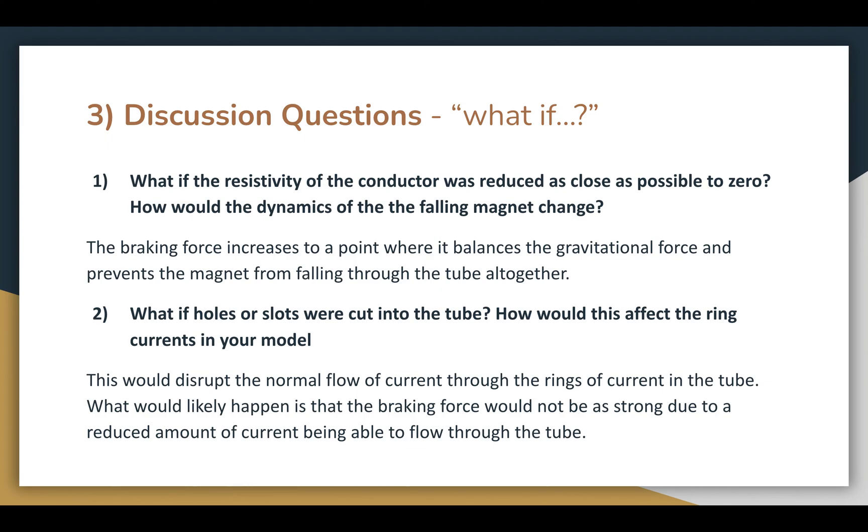And lastly, what would happen if we cut holes in the tube? Well, it's hard to say without actually doing the experiment, but what would likely happen is that this would disrupt the normal flow of current in the tube, thereby reducing the extent to which the aluminum tube is able to apply a breaking force to the falling magnet. This would be due to a reduced amount of current being able to flow through the rings of the tube, as caused by the holes.